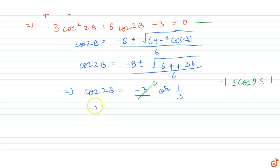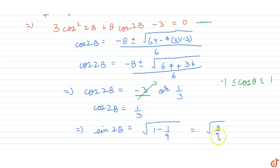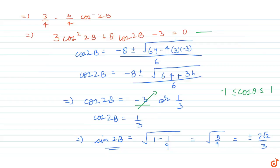So cos(2b) = 1/3, which implies sin(2b) = √(1 − 1/9) = √(8/9) = ±2√2/3. This is the value of sin(2b).